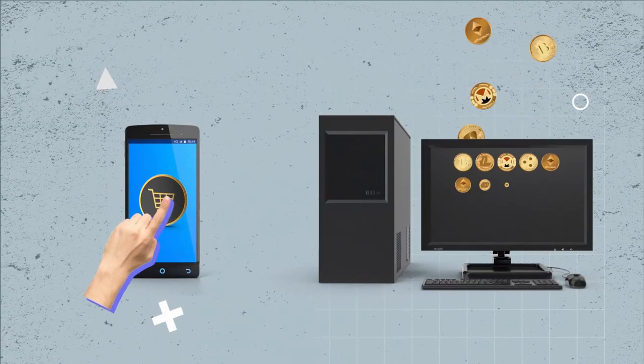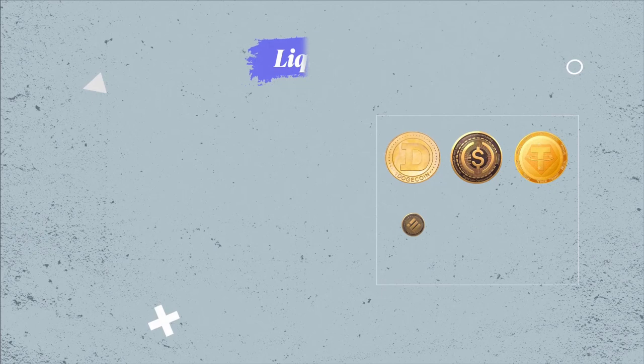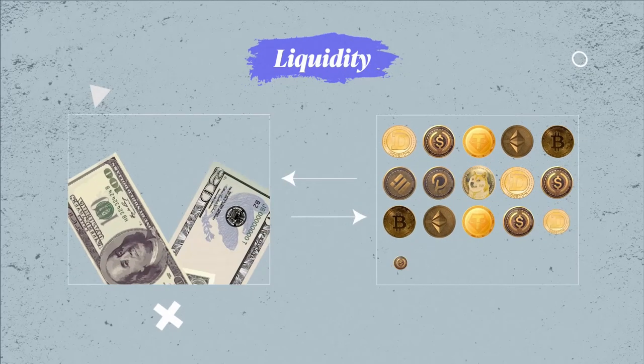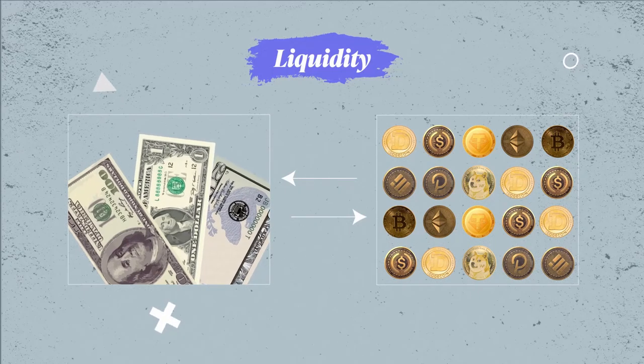Fundamentally, any market is driven by supply and demand. In crypto markets, the effects are more exaggerated as there's less liquidity. Liquidity refers to the ease with which an asset can be bought, sold, or converted without affecting its market price.